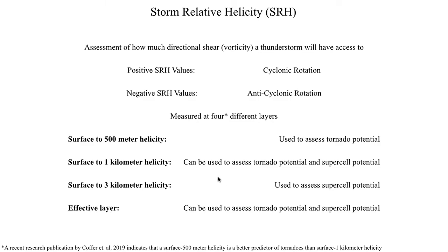There's another reported value called effective layer storm relative helicity. This measures how much storm relative helicity, or streamwise vorticity, is present in what's referred to as the effective inflow layer — basically the depth of the atmosphere where a thunderstorm can get its fuel supply. For example, if you've got an effective inflow layer from the surface up to 1200 meters, the thunderstorm can receive its supply of warm, moist air in the layer between 0 and 1200 meters.